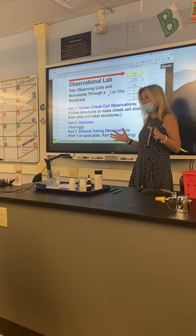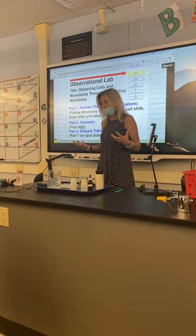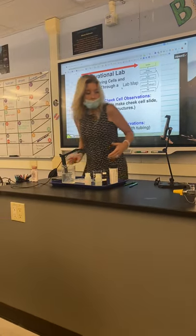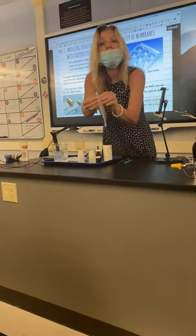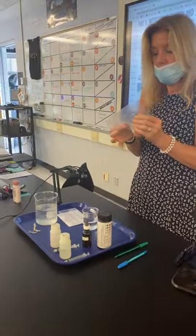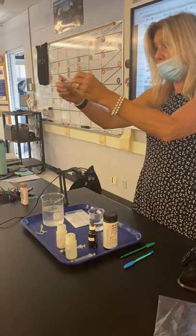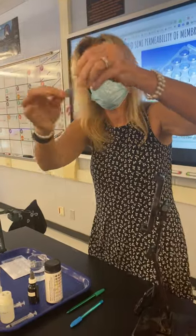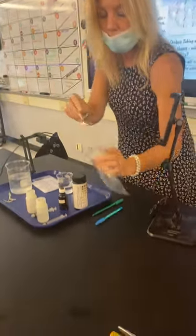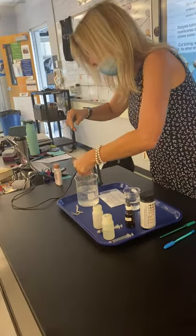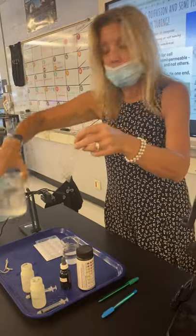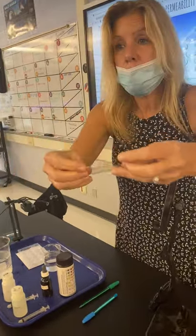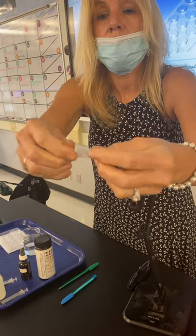Part three is dialysis tubing observation. So open up your lab notebook because this part, number one, we're working with dialysis tubing. When dialysis tubing is dry, it's just like paper — it feels crunchy — but once you get it wet, it's more flexible. All you have to do is set it in a beaker of water and run it between your fingers like this.